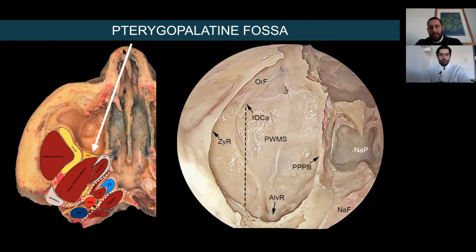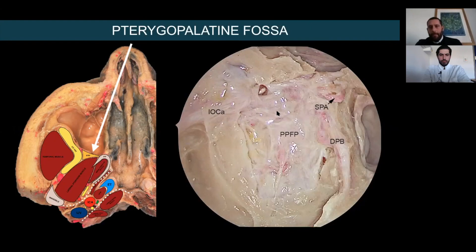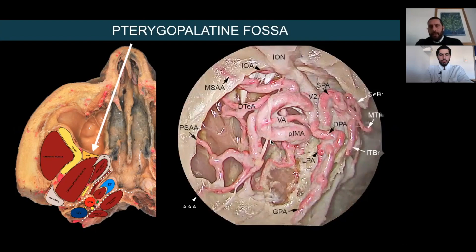We start with the pterygopalatine fossa. We open the sphenopalatine foramen — the only access to the pterygopalatine fossa. With Kerrison punches we remove all the bone. Always preserve the periosteum first, as this is an avascular plane allowing bloodless dissection. This is the sphenopalatine artery and the descending palatine bundle. Behind the periosteum — which we now open — you have the fat, vessels, and nerves. After removal of the fat, you can see all the anatomy of the maxillary artery and its branches, including the vidian artery heading toward the vidian canal deep in the pterygopalatine fossa.